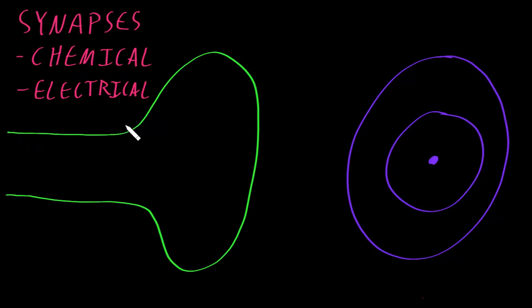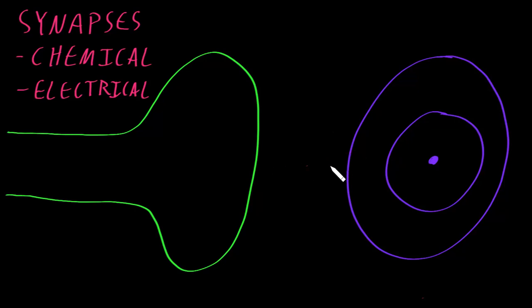Here I've drawn an axon in green and one axon terminal at the end of it, and then I've drawn a target shape to represent a target cell, one of the types of cells that a neuron will communicate information to. Chemical synapses have a small gap — actually much smaller than I've drawn here — so the axon terminal of the neuron and the target cell are not physically touching each other. There's a small gap, and this gap is called the synaptic cleft.